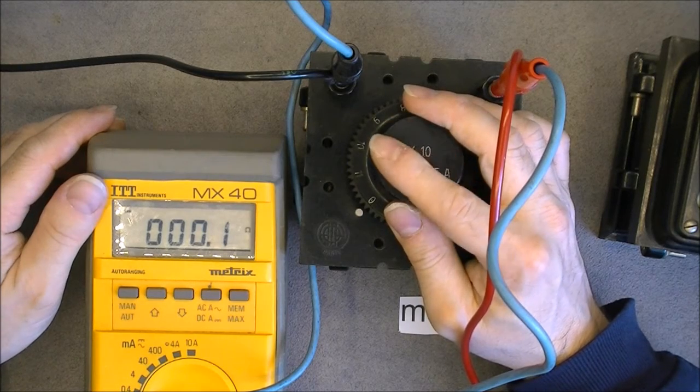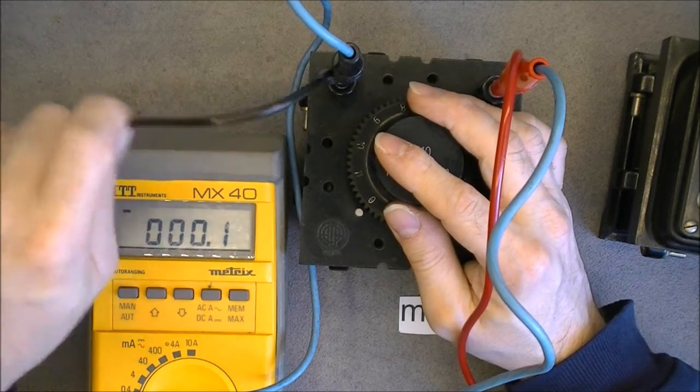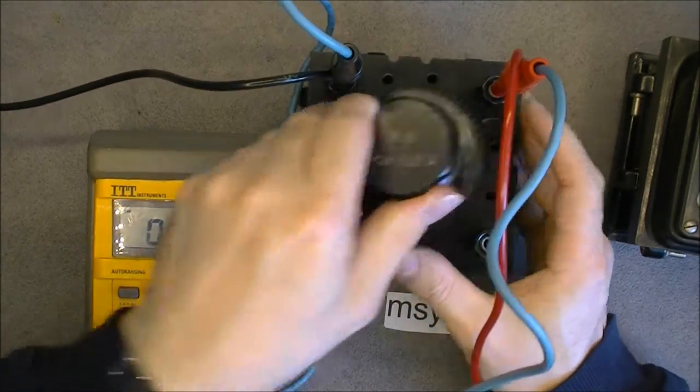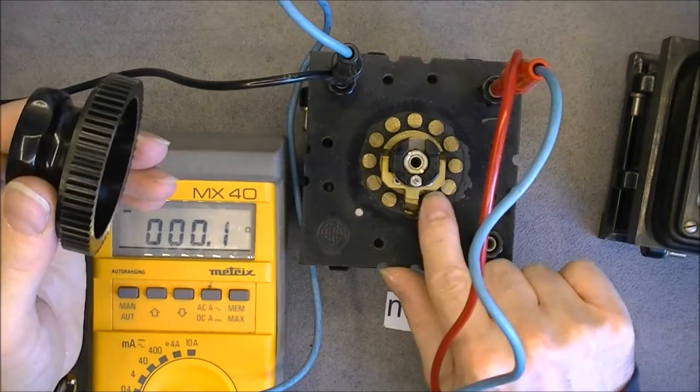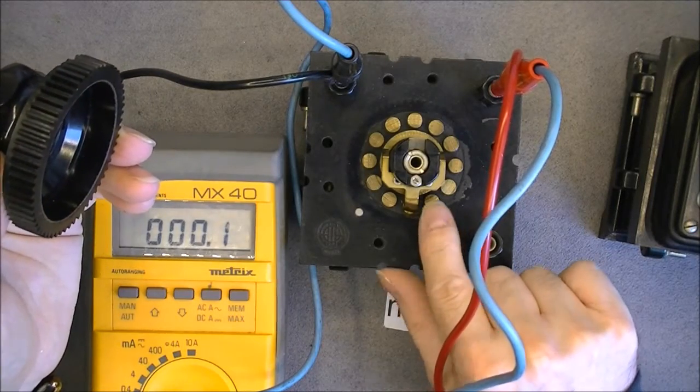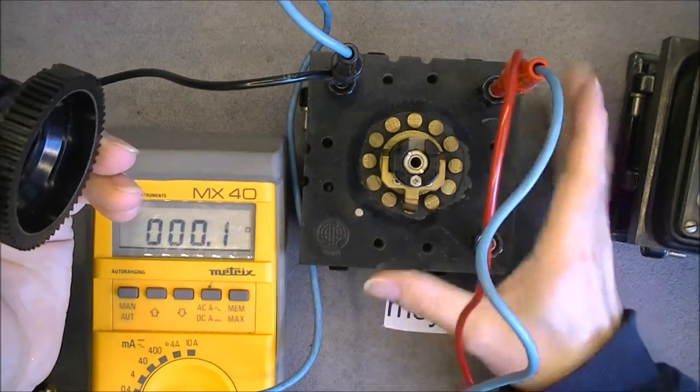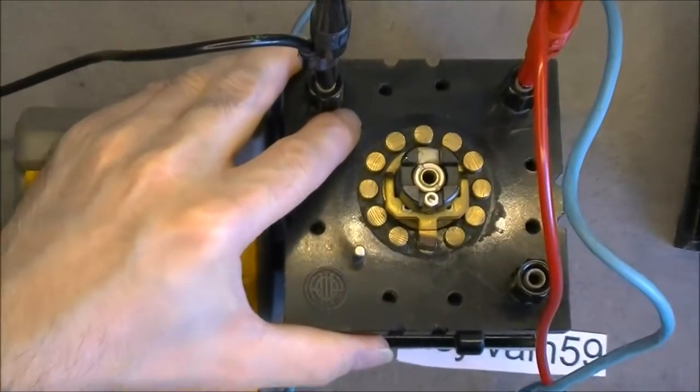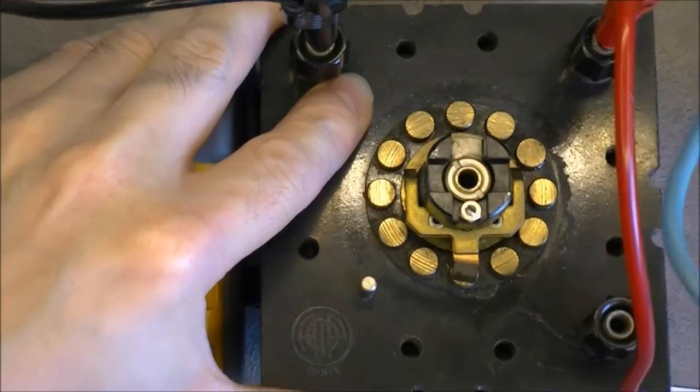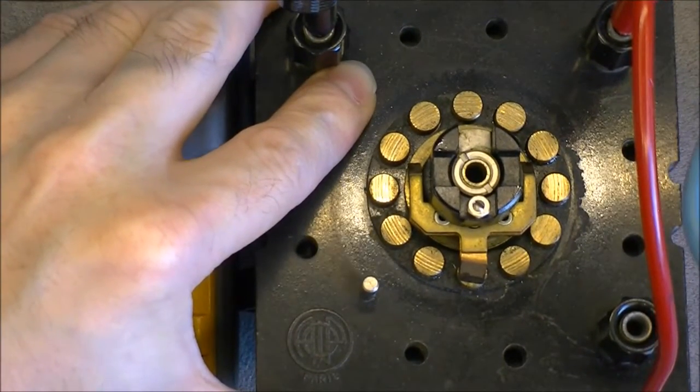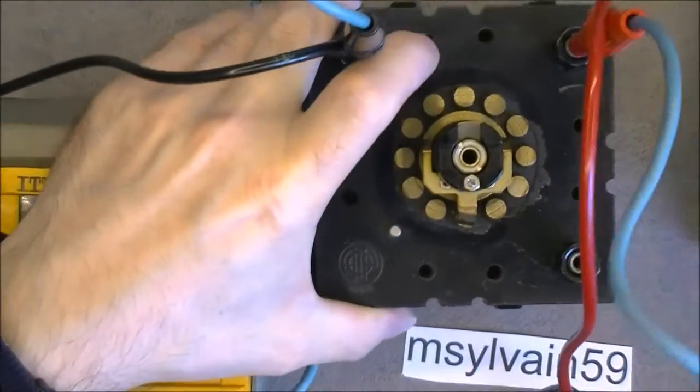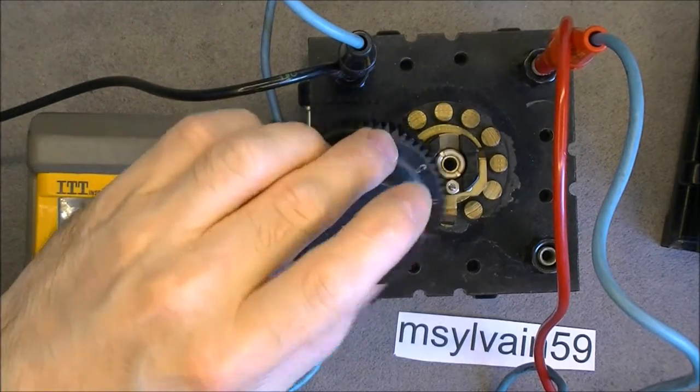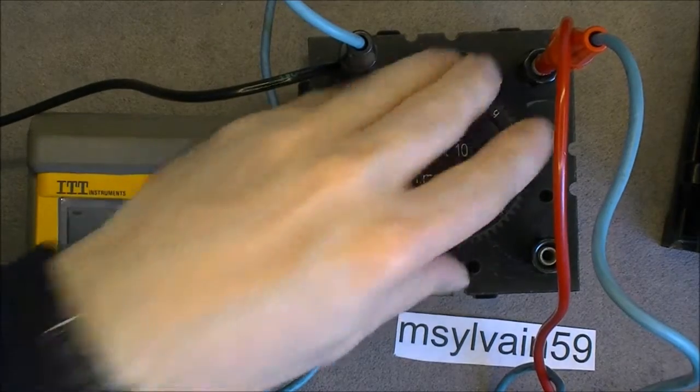So we have here 0.1 ohms. It is the resistance of the wires and the resistance in the switch. Here we have brass wiper switch as you can see here. Very old school as you can see on old equipment. I think it will deserve a little bit of cleaning. It will be useful. I did undo the set screw a little bit. This is why you can remove the button so easily.